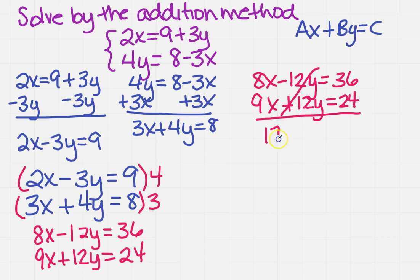So I do 8 plus 9, which is 17. And then I do 36 plus 24, which is 60. Oh, this isn't looking good, is it? So I need to get x, so I'm going to divide both sides by 17. And then I get x equals 60 over 17.